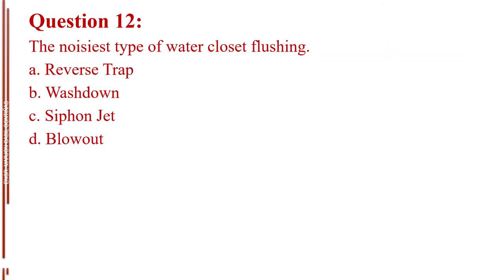Question number 12. The noisiest type of water closet flushing. A. Reverse trap. B. Wash down. C. Siphon jet. D. Blow out. The answer is Letter B, wash down.